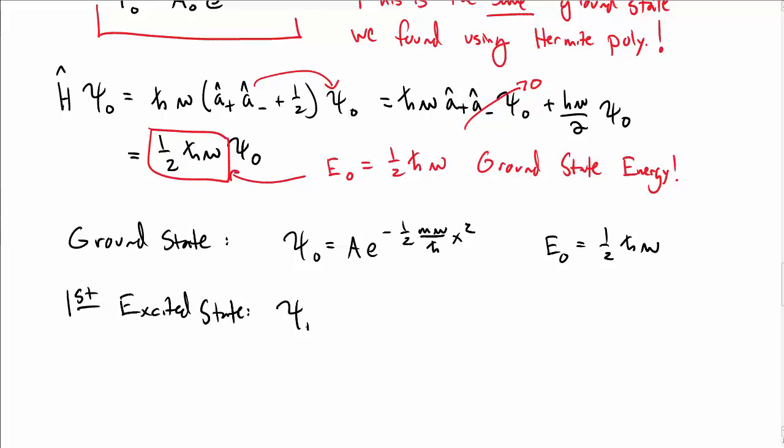We could also find the first excited state, so ψ₁, which we get by applying A⁺ times ψ₀. So we get a constant times this square root factor.